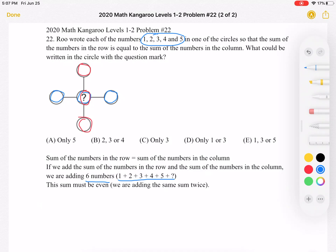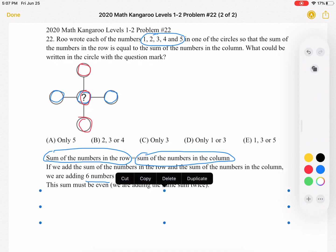Well, the sum must be even, because we're adding the same sum twice. Again, the sum of the numbers in the row is equal to the sum of the numbers in the column. So our total sum is equal to the same sum added twice, which is the same as multiplying that sum by 2.